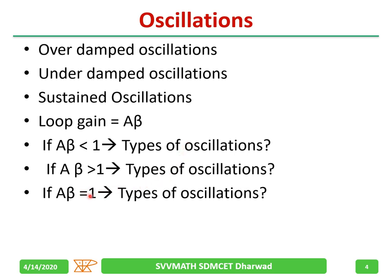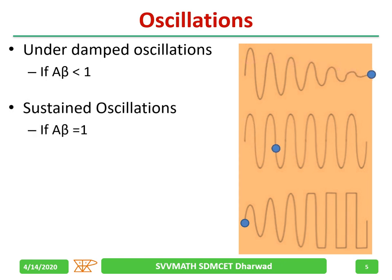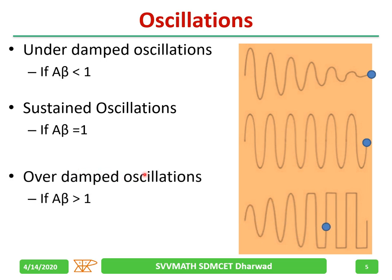When A·β is less than 1, we get under damped oscillations where the amplitude goes on reducing. When A·β equals 1, we get sustained oscillations where the amplitude remains the same. With over damped oscillations, the amplitude goes on increasing up to the maximum voltage, and then we start getting a clipped waveform.